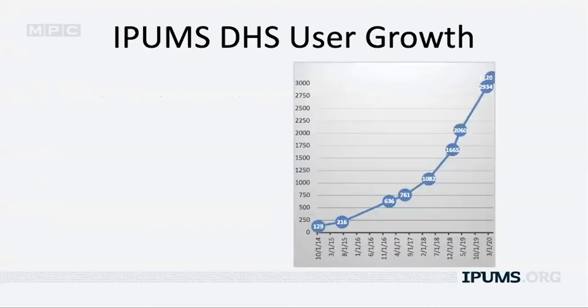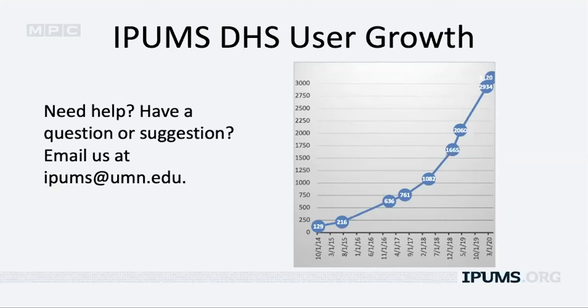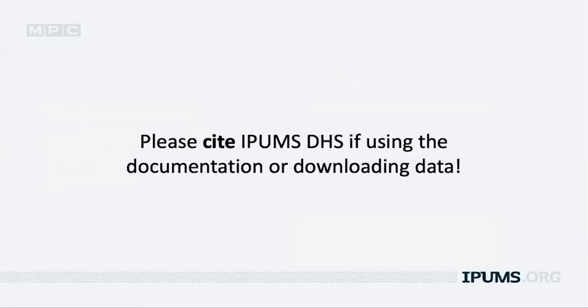We're very pleased with the recent exponential growth in our users — thanks for being part of that. We survey our users every year, and we hope you'll take that survey and give us feedback. You should also feel free to email our helpline at any time at ipums@umn.edu. Also, if you use IPUMS — whether just the documentation or you download a dataset — please cite us, as that helps us continue our funding from NICHD.